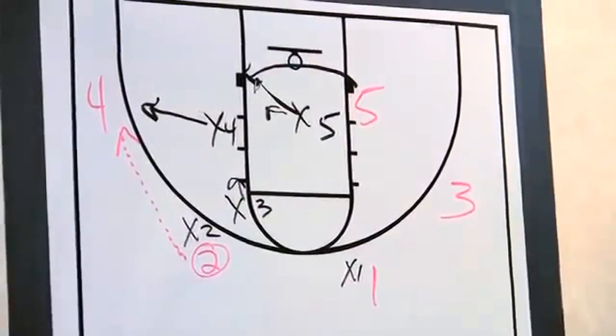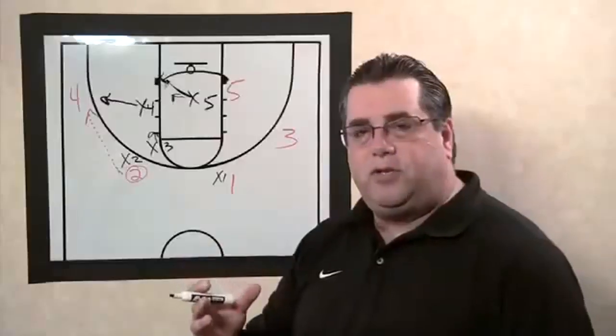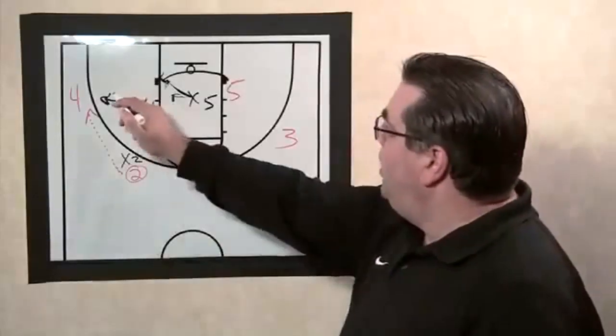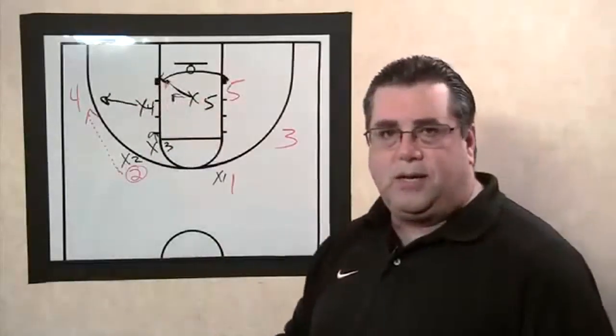If the ball is thrown in to the low post, the exact same coverage in the diamond in one, we would double with X4 and try and dig the ball out that way.